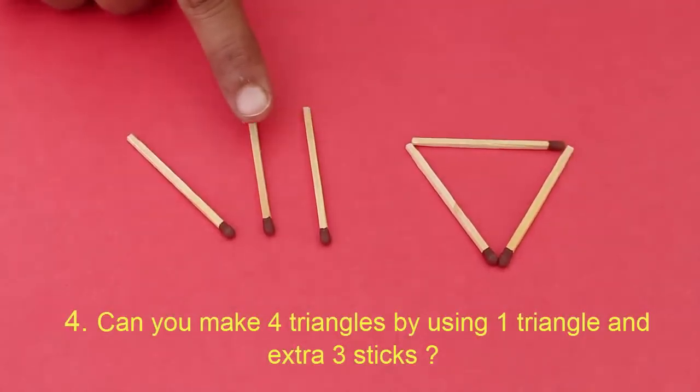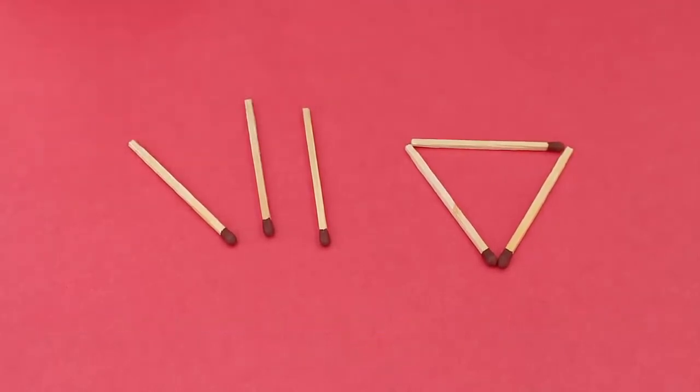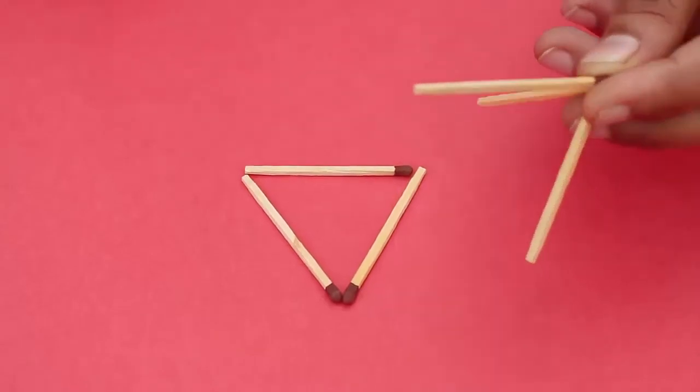Now for the fourth puzzle. You have an equilateral triangle and you have three matchsticks. How do you make four triangles?